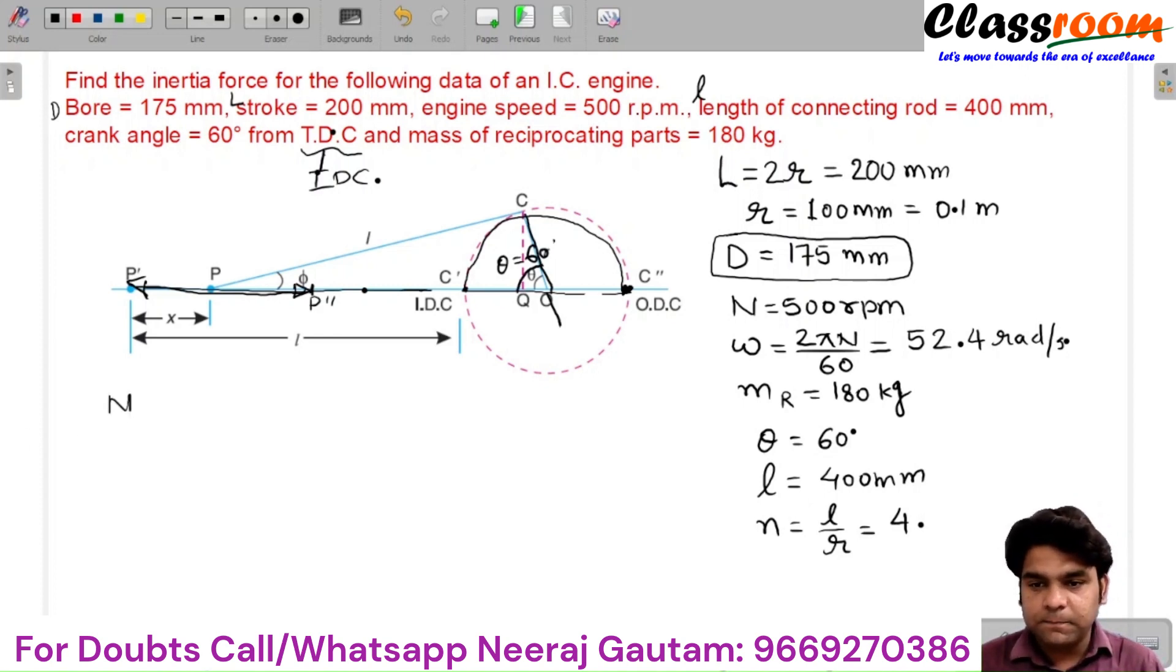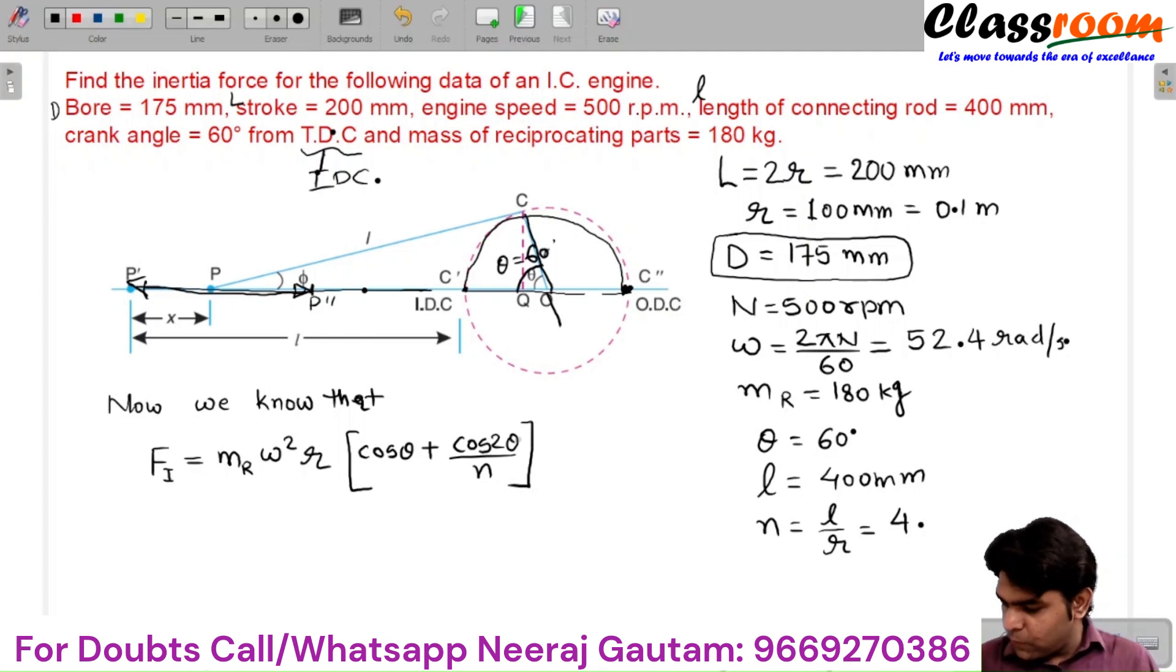The value of N is given. Now we know that the inertial forces FI are equal to MR omega square R times cos theta plus cos 2 theta by N.